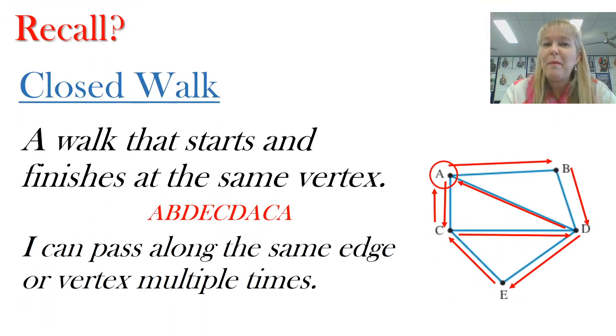If you recall from my previous video, we talked about closed walks, which was a walk that starts and finishes at the same vertex and where we can pass along the same edge or pass through a vertex multiple times. Notice in this graph here, we've been to C a couple of times, we've been to D a couple of times, and we've started and finished at A. So that's a closed walk.